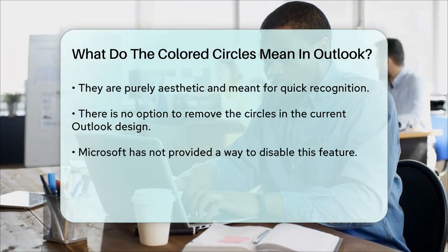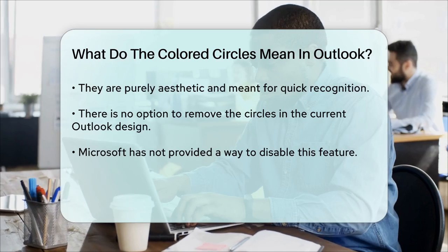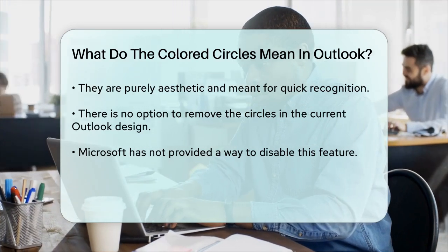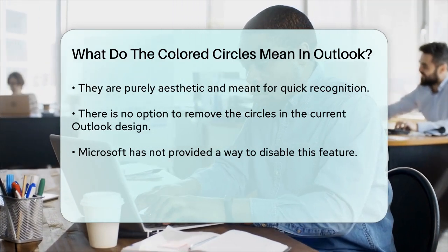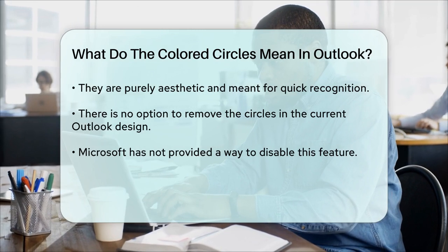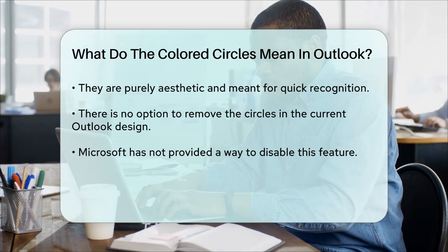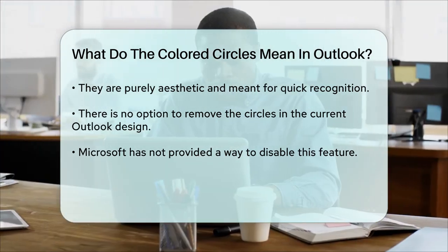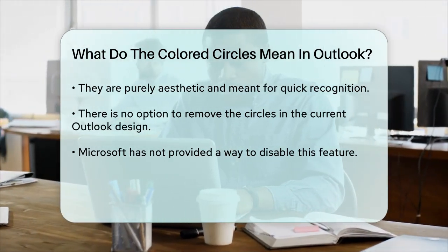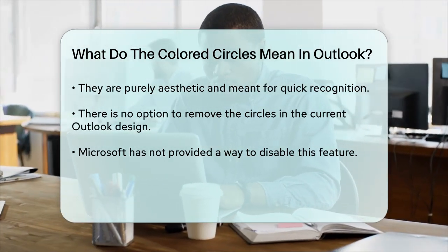In summary, the colored circles in Outlook are just visual aids to help you identify senders quickly. While they might be a bit distracting for some, they don't carry any specific meaning beyond that. That's a fun fact.